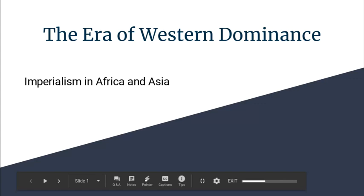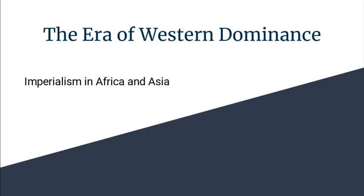Welcome to the Unit 4 discussion on the era of Western dominance, specifically imperialism and colonialism in Africa and Asia. This really is the first of a two-part series because Unit 4 will talk about the wider scope of imperialism around the globe. In the second part, next week, we'll specifically look at China and Japan and how those two go through the modes of imperialism and how they come out very differently from imperialistic influences.